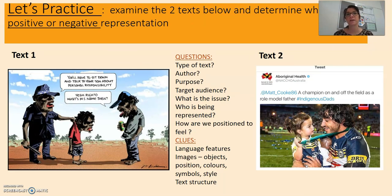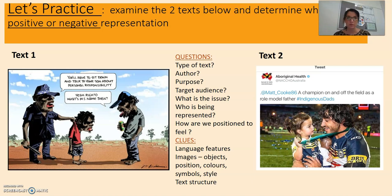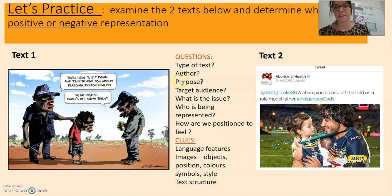So let's practise. Examine the two texts and determine whether it's a positive or negative representation. Both texts talk about the same issue. When looking at them, ask those questions: text type, author, purpose, target audience, what is the issue, who is being represented, and how are we positioned to feel. Also look at clues — language features, images, objects, positions, colours, styles, structure — and come up with your own ideas.